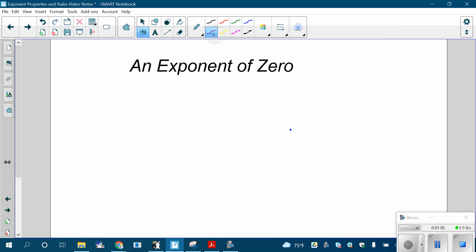Next, an exponent of zero. This is just a flat-out rule: anything to the zero power is one. The only exception to that is zero to the zero power, which is a confusing situation and not really defined. But anything else to the zero power, even 1 to the zero power, is one. X to the zero power is one.